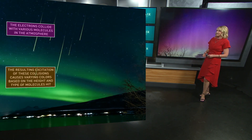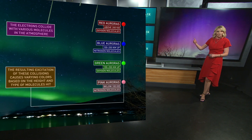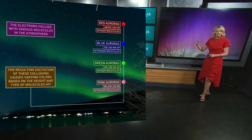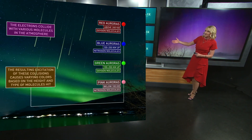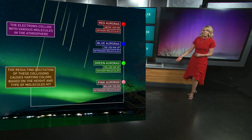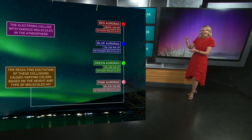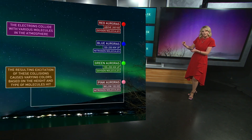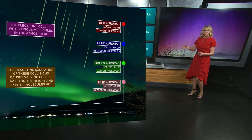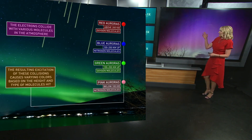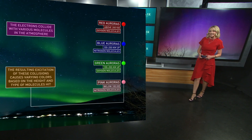The colors that you see in the sky are the result of those electrons running into the nitrogen and the oxygen in our atmosphere. The different colors are based on how high up in the atmosphere it is and what molecule those electrons are running into. And that's what causes these northern lights like we saw so brightly last night.